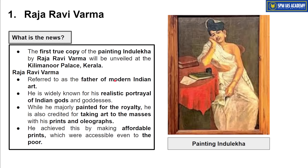Raja Ravi Verma is considered the father of modern Indian art. He created realistic paintings through real portrayal of Indian gods and goddesses. He would mainly paint for royalty and rich people in the early phase. Painting as an art was restricted only to the very rich aristocrat class. The common masses could not afford paintings.